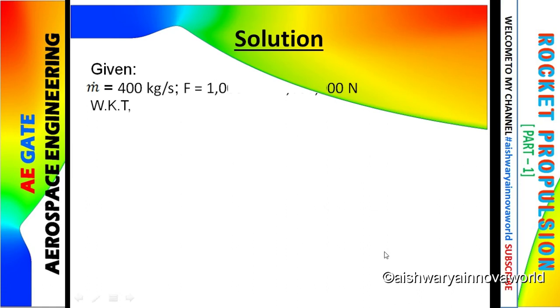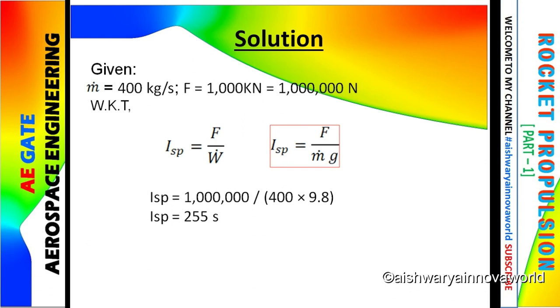Here comes the solution. Here comes the given data. We need to make sure we convert the unit correctly. We know what is specific impulse. ISP equals to F by W dot. W dot can be written as M dot into G. All the values are given: F we know, M we know, and G is 9.8. If we put the value 9.8 in the formula, we get ISP as 255 second. So our answer is 255 second.